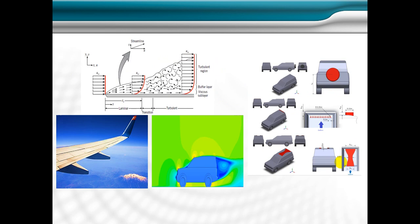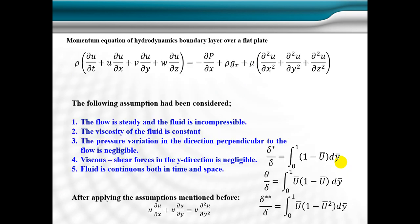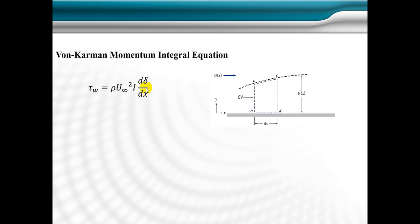We start by writing the governing equation, which is the momentum equation for hydrodynamic boundary layer over the flat blade and make many assumptions. The flow is steady and the fluid is continuous both in time and space, and the viscous shear force in the y direction has been negligible. We derive the von Karman momentum integral equation, which is valid for laminar and turbulent. We derive this formula for fluid flow over flat blade by taking a control volume.